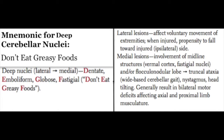There are four sets of cerebellar nuclei. Going from lateral to medial, they are the dentate, emboliform, globose, and fastigial. These can be memorized by using the mnemonic 'Don't Eat Greasy Foods.'